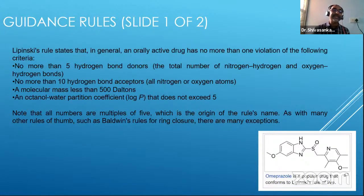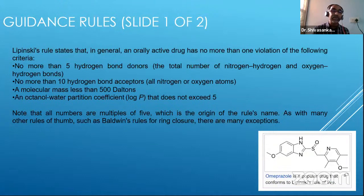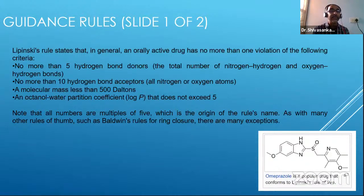This is called Lipinski's Rule of Five. There are four rules but all in multiples of five. No more than five hydrogen bond donors — the NH and OH should not be more than five. Not more than ten hydrogen bond acceptors inclusive of nitrogen or oxygen atoms. Molecular weight should preferably be lower than 500. And the partition coefficient between octanol and water should not exceed five.